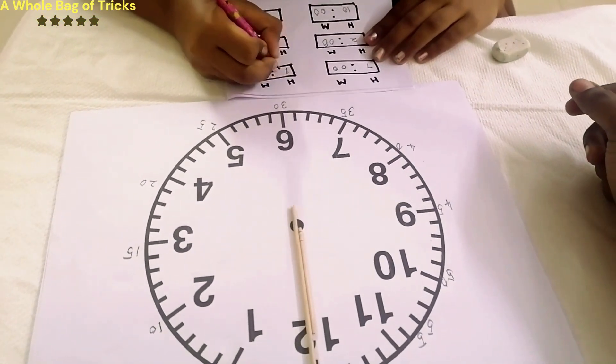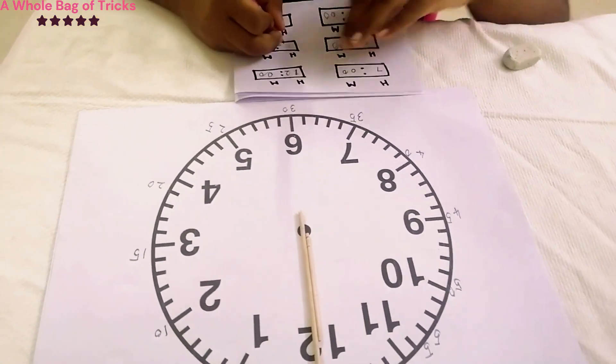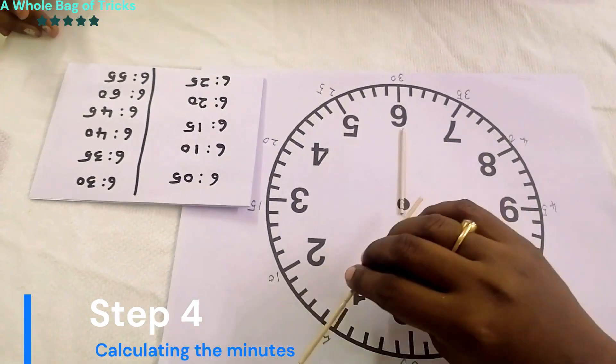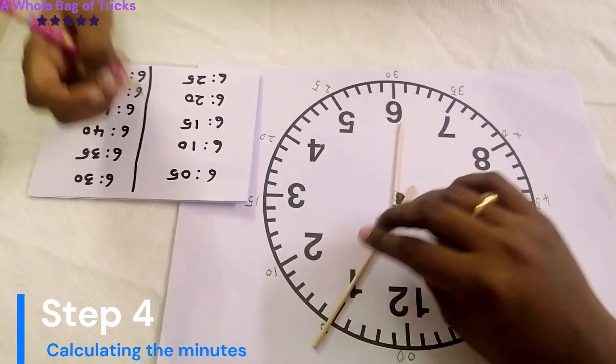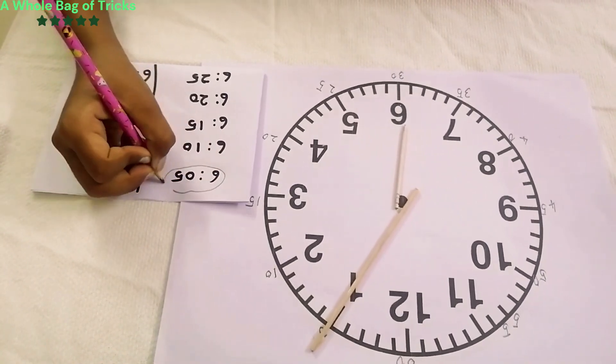Once they have got it right, now start moving the minutes hand. Initially move it to each value like from 5, 10, 15 and keep the hour's hand as such.